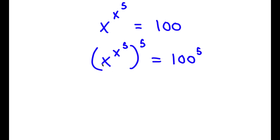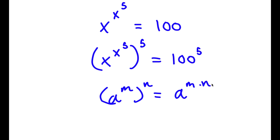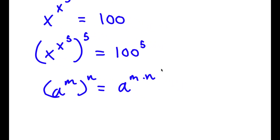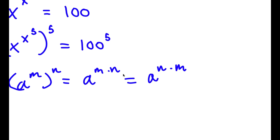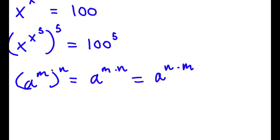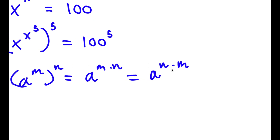Now, if I have something in the form a to the power of m to the power of n, this is the same thing as a to the power of m times n. And m times n are interchangeable, meaning this is also equal to a to the power of n times m. So if you can write a to the power of m times n as a to the power of m to the power of n, this means we can also write a to the power of n times m as a to the power of n to the power of m.